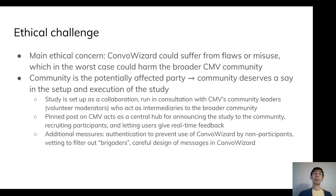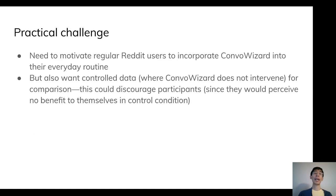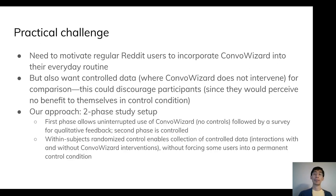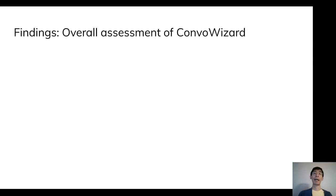Finally, let's consider the practical challenge, which involves a balance between our need for controlled data and the need to motivate regular Reddit users to keep using ConvoWizard throughout their everyday routine. Our approach is a two-phase study design, with an uncontrolled first phase allowing for qualitative feedback in the form of a survey, followed by a second phase containing a randomized controlled experiment where the control involves not showing any interventions.